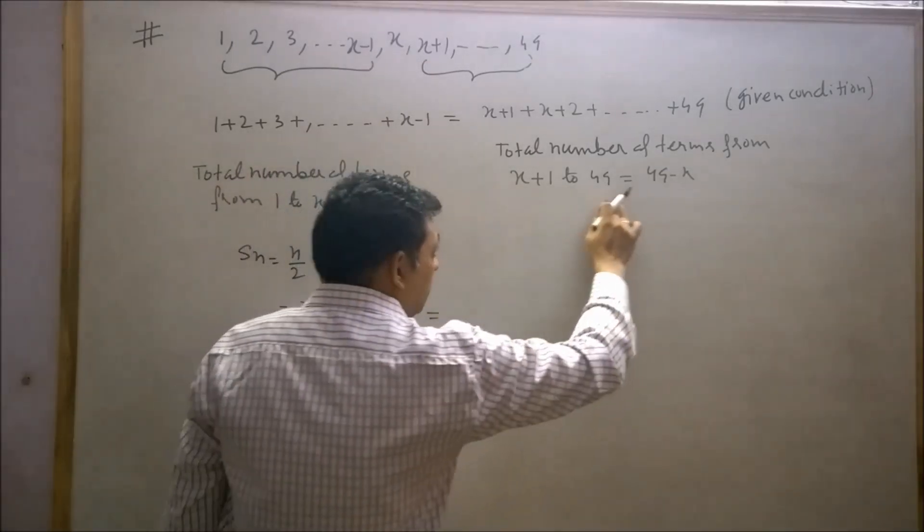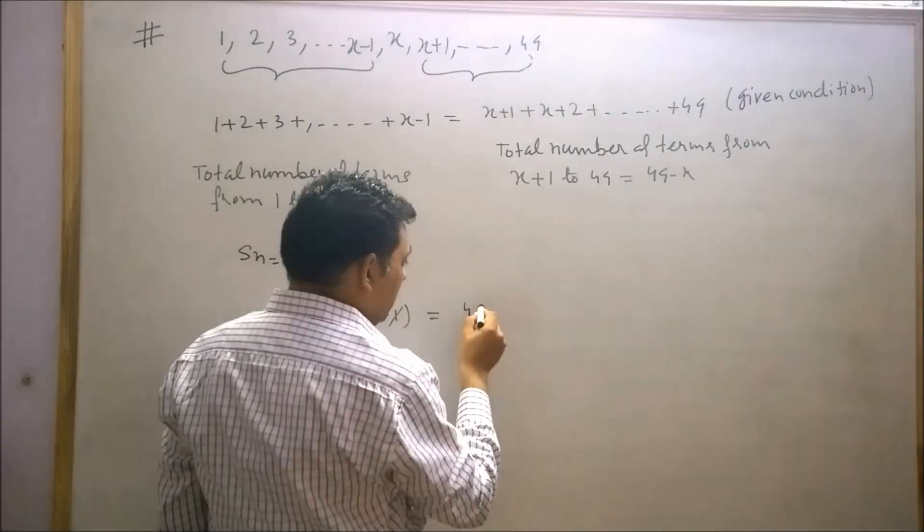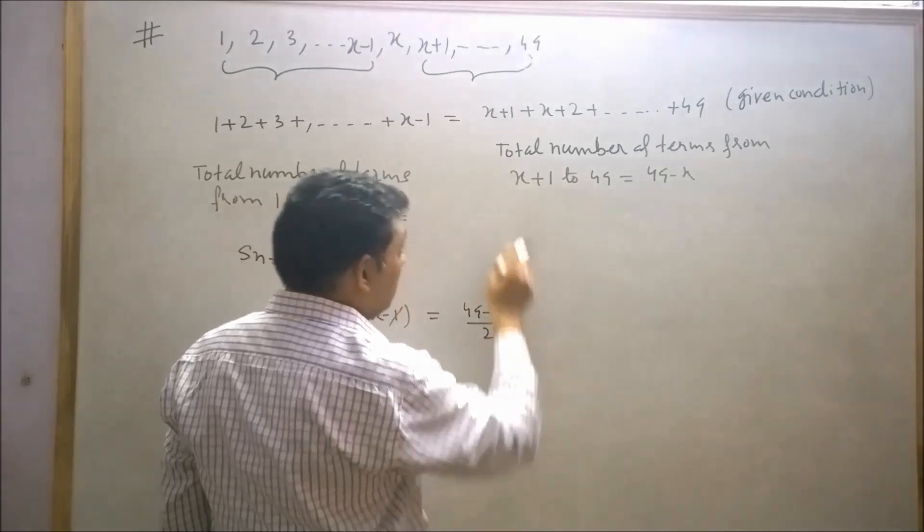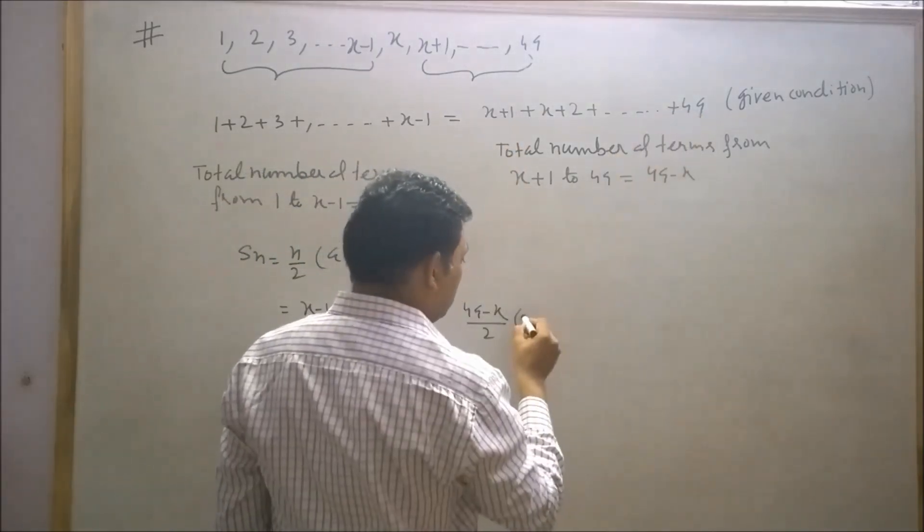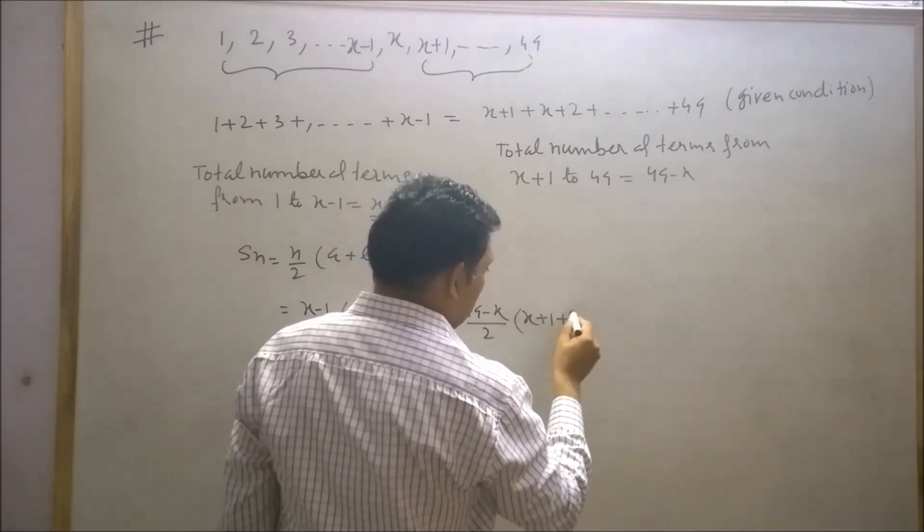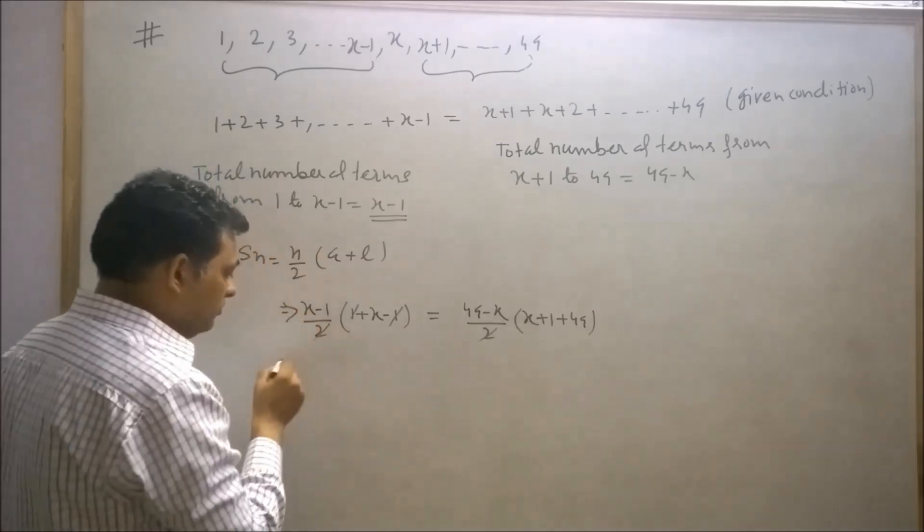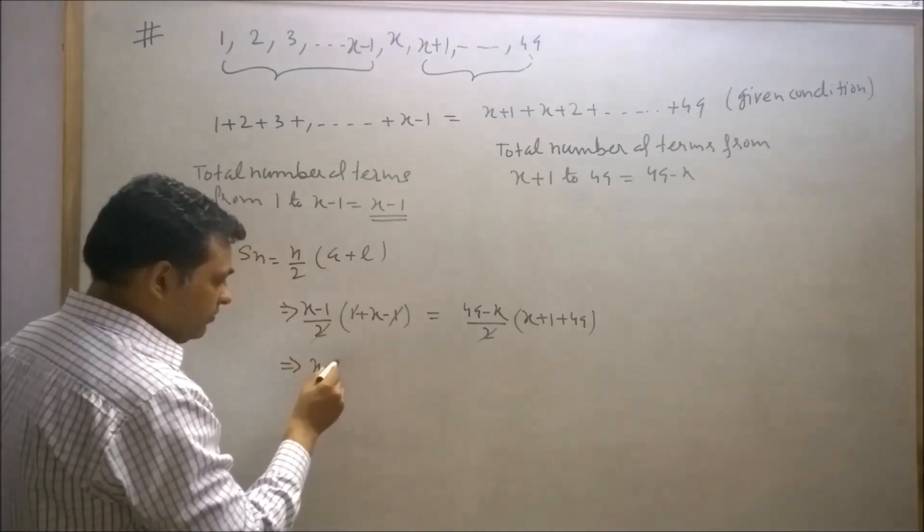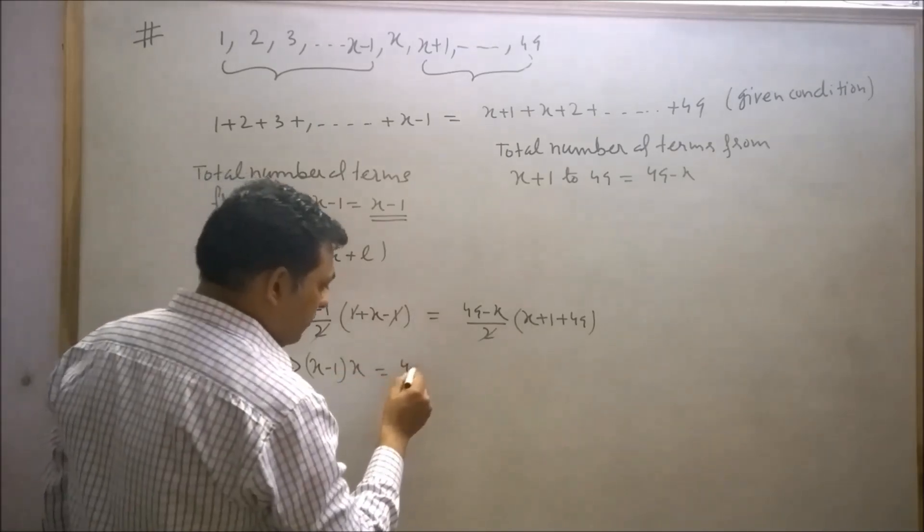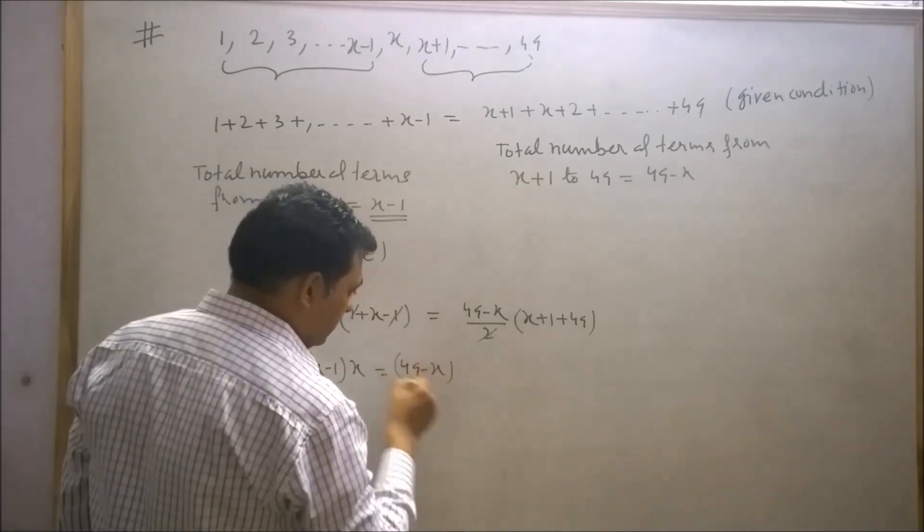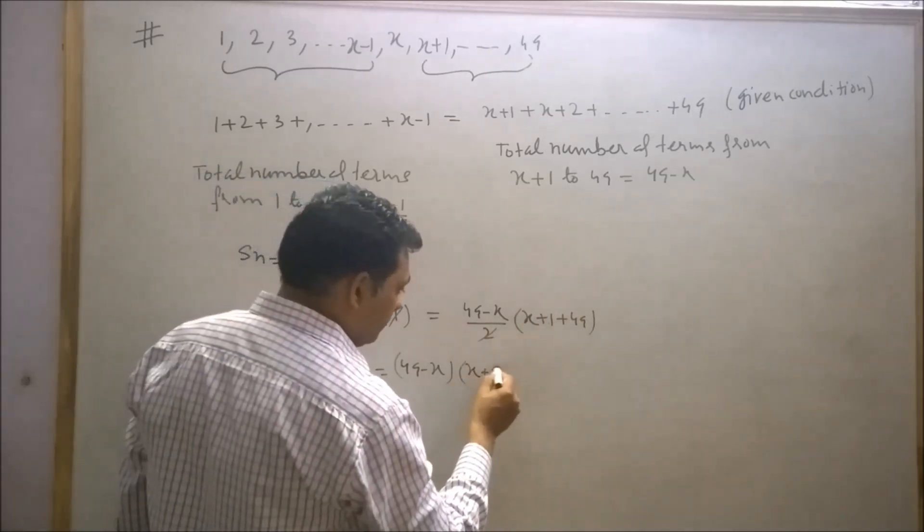1 plus x-1, minus 1 plus 1 will be cancelled out. This is equal to the total number of terms from x+1 to 49, which is (49-x)/2. Here, first term is x+1 plus 49. So x+1 plus 49. 2 and 2 will be cancelled out. This will be x+50.